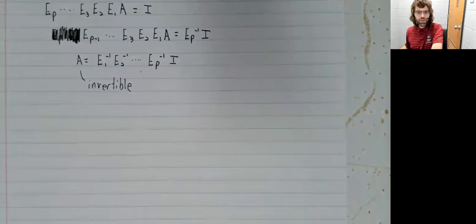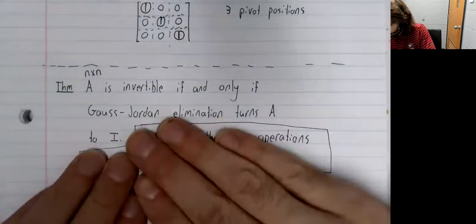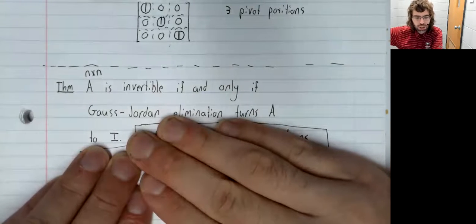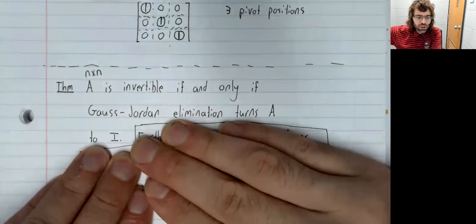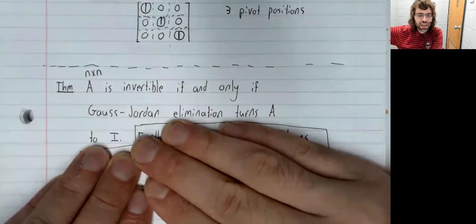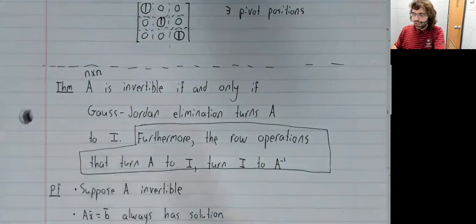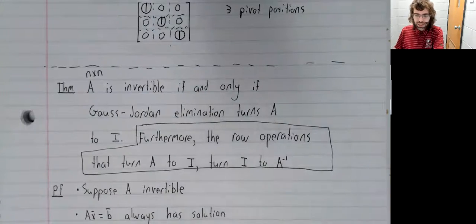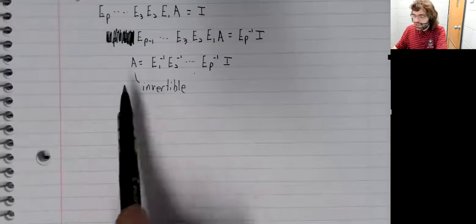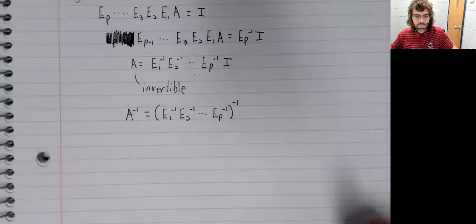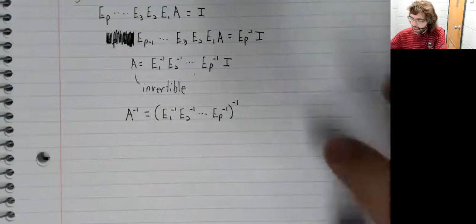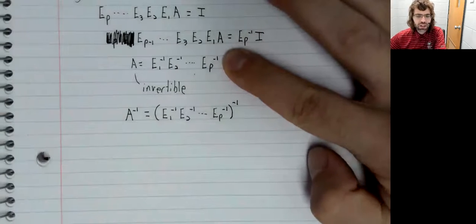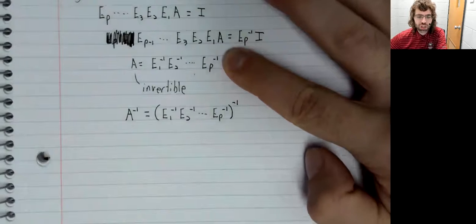So we've proven this if and only if part of the theorem: that A is invertible if and only if Gauss-Jordan elimination turns A to I. Let's now prove the second part. Since A is invertible, we can take its inverse. I'm ignoring the I here because multiplication by I is like multiplication by one — it doesn't do anything.